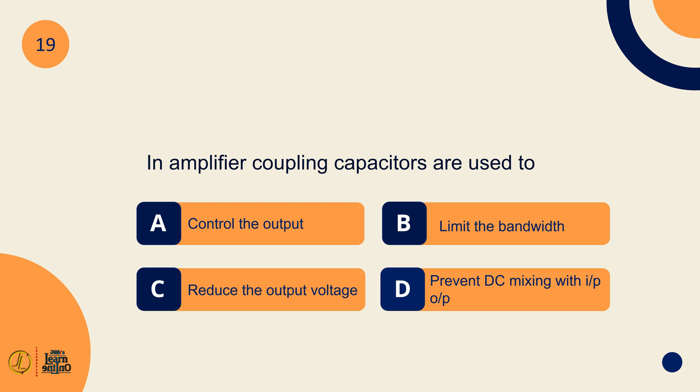In amplifier coupling capacitors are used to prevent DC mixing with input output.